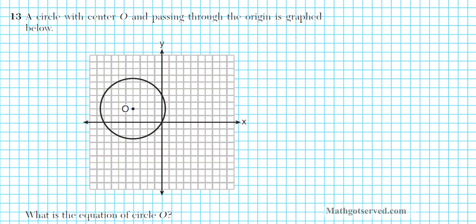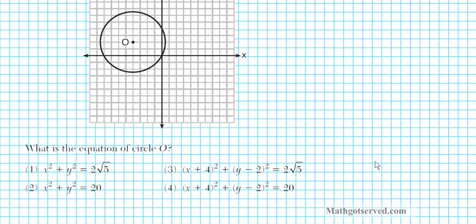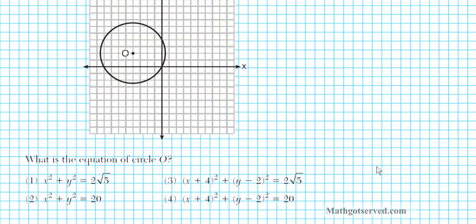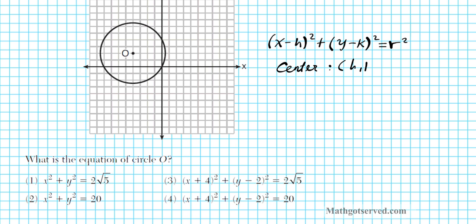Let's take a look at number 13. It says a circle with center O and passing through the origin is graphed below. The question is: what is the equation of circle O? In order to do this problem, you have to remember the standard form of the equation of a circle: x minus h squared plus y minus k squared equals r squared, where the center is (h, k) and the radius is r.